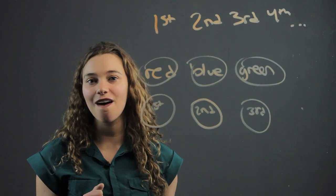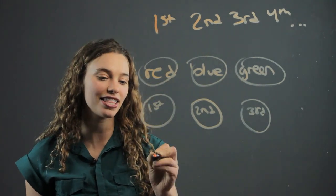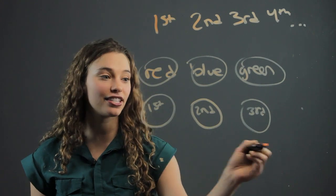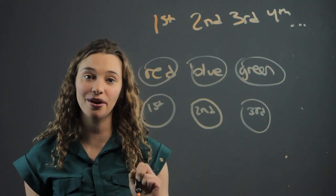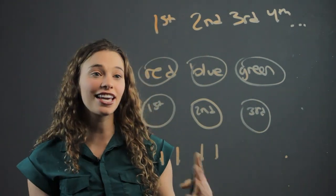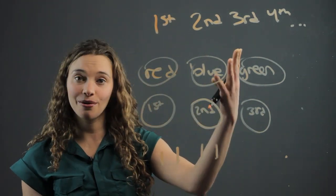Something else you can do is have them get on their feet and line up by their birthdays or by shortest to tallest, and then have them say their order: first, second, third, fourth. So they get more familiar with these ordinal numbers,